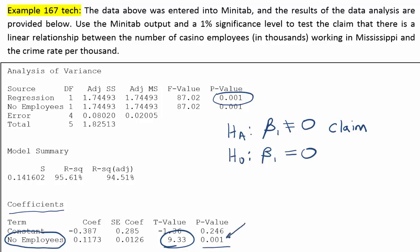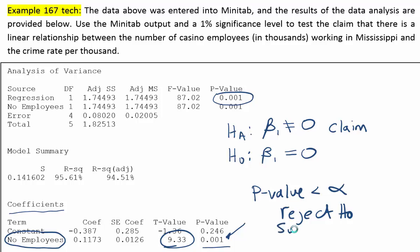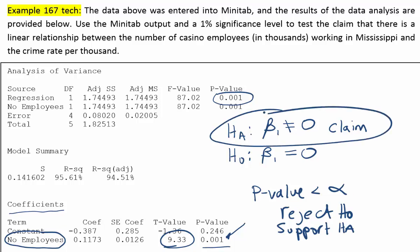Based on our p-value of 0.001, we can say that the p-value is less than alpha, because the alpha was 1% and the p-value is less than 1%. Whenever that happens, we say that we reject the null hypothesis. And if you're rejecting the null hypothesis, you are then supporting the alternative — those two things go hand in hand. So we're basically saying this claim seems to be supported by the evidence. We support the claim that there is a linear relationship between the number of casino employees and the crime rate per 1,000.